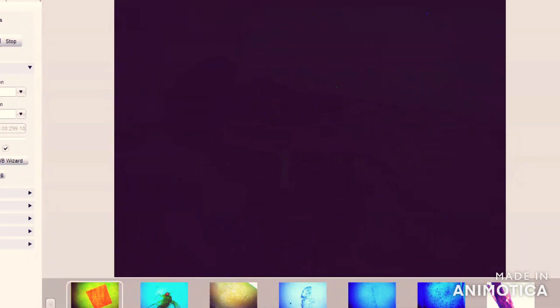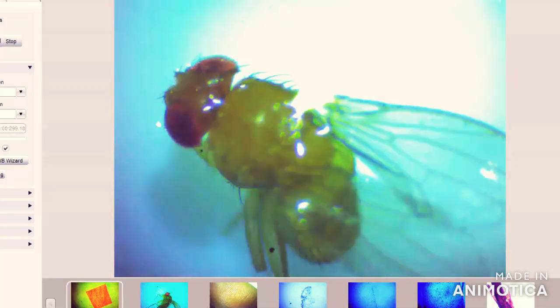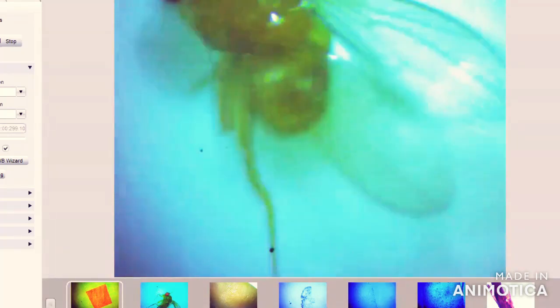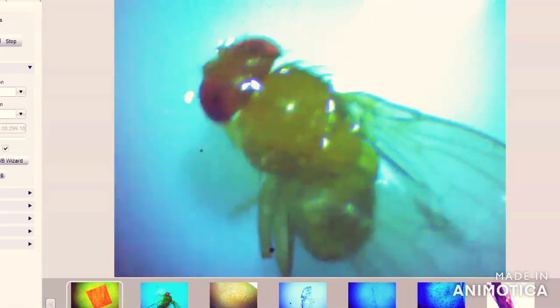We are here to see the Drosophila under the microscope. If I turn on the light, this is the red-eyed Drosophila as you see here, and it has two wings. So it belongs to the order Diptera, di means two. This is one red-eyed Drosophila.